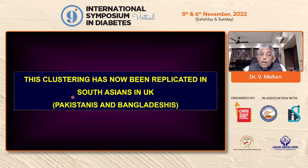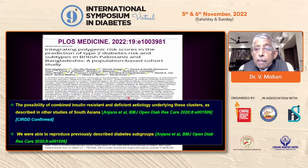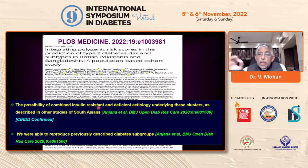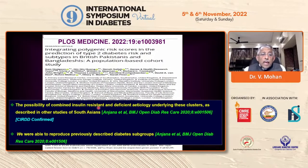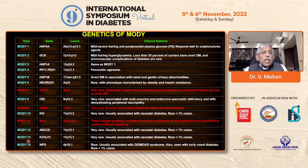I'm happy to tell you that this clustering has now been replicated in South Asians in the UK — in Pakistanis and Bangladeshis — published in PLOS Medicine two or three months ago. They reported that the possibility of a combined insulin resistant and deficient etiology has been reproduced: the subtypes described by Dr. Anjana have been replicated, confirming it is not just an Indian phenomenon but a South Asian phenomenon. The CIRDD combined type has also been recently replicated in China, and a review article has been written on all the clustering showing that in Asians, CIRDD seems to be a unique subtype.